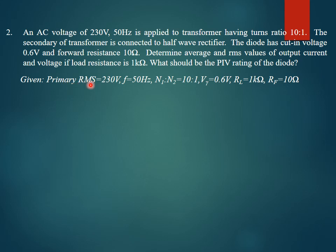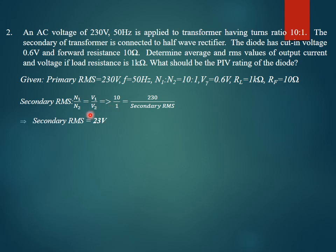Given the primary RMS of 230 volts and the turns ratio, we first find the secondary RMS. Using N1/N2 = V1/V2, where N1 = 10, N2 = 1, and V1 = 230 volts, we get the secondary RMS voltage V2 = 23 volts. From the secondary RMS, the secondary peak voltage Vm is found by multiplying by √2, giving 32.52 volts.